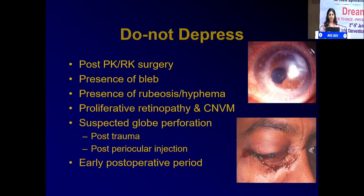Important situations when we do not perform scleral depression: post-PK or RK surgery, presence of a bleb, presence of rubeosis or hyphema, proliferative retinopathy and CNVM — as these increase the chance of bleeding — and suspected globe perforation. If the patient comes with trauma, never depress. Also: post-trauma, post-periocular injection, and in the early post-operative period — do not depress.